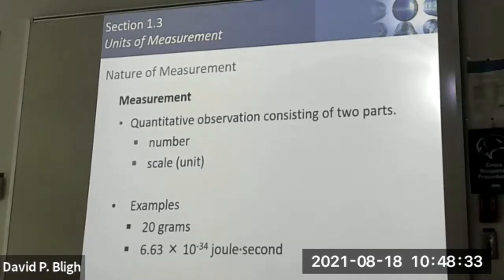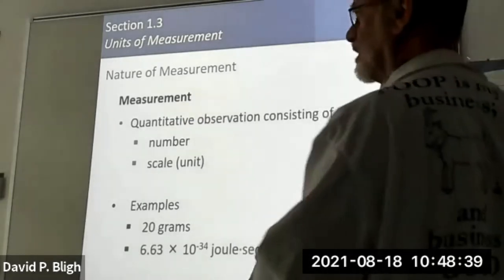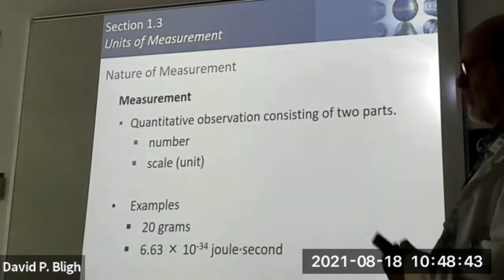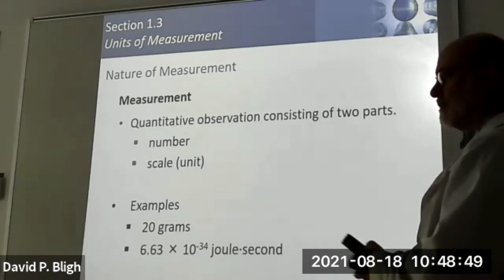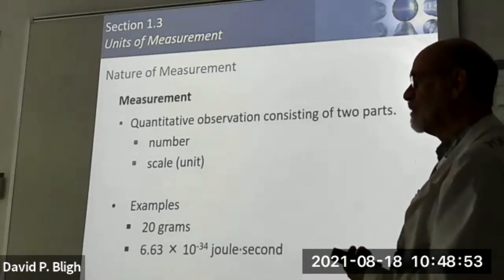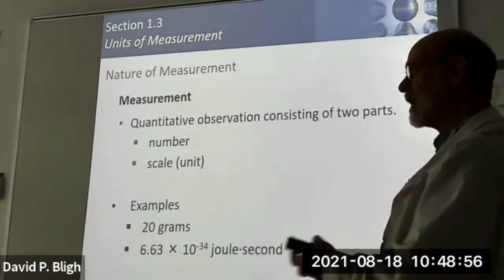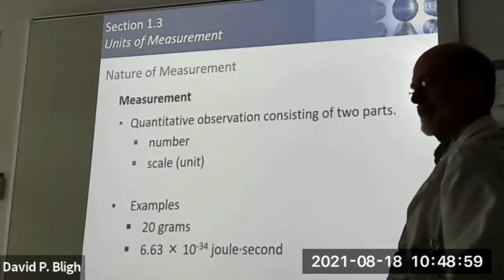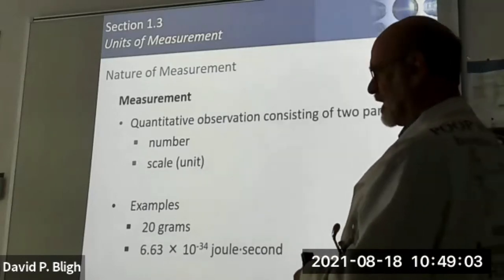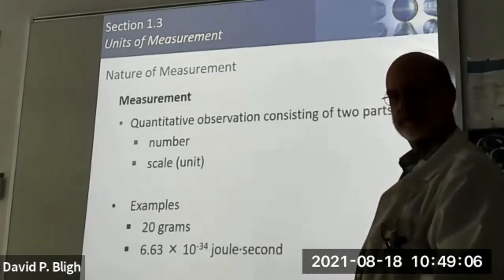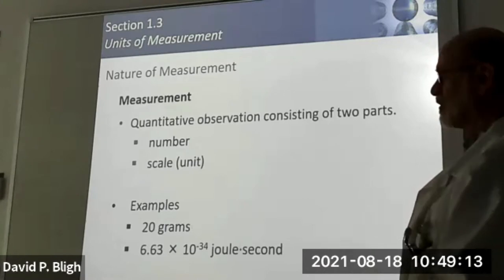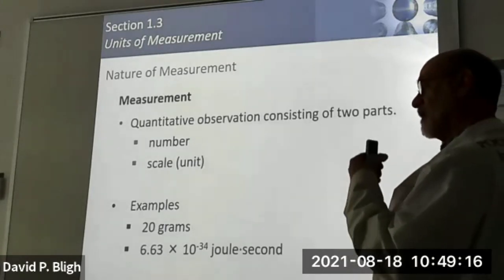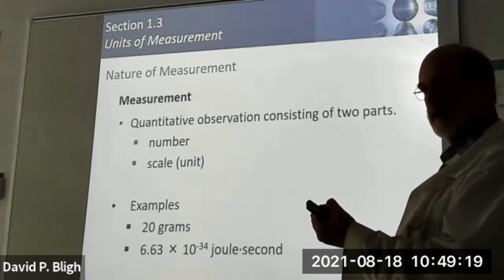Whenever we want to make observations in the scientific method, you're going to make a measurement of some kind usually. Sometimes you just make qualitative observations — does it turn blue? Does it get bigger? Does it completely lose its structure? But science can only go so far with qualitative information. Eventually you're going to need quantities, and that means numbers. When you make a measurement, you're going to have both the magnitude — the number — and a unit of measure.